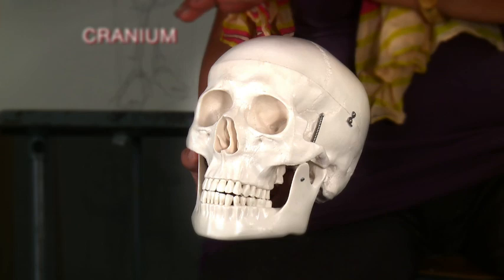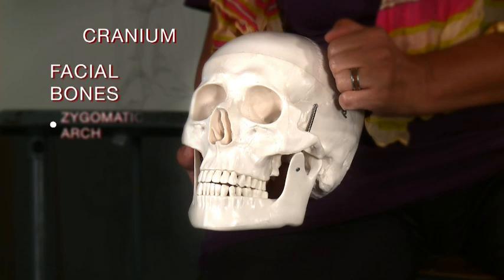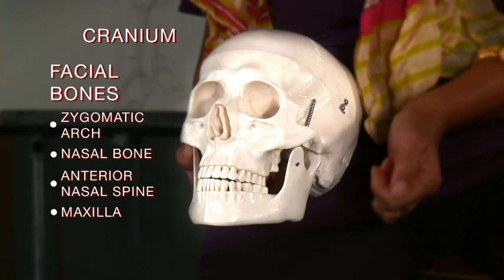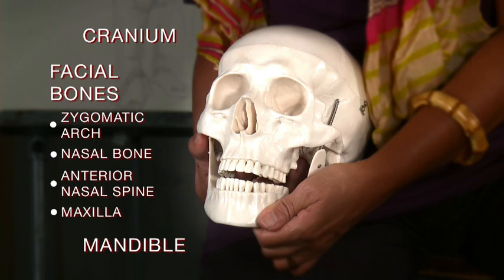The skull is made up of the bones of the cranium, the facial bones, which consist of the zygomatic arch, the nasal bone, the anterior nasal spine, the maxilla, and the mandible, which is the only movable part of the skull.